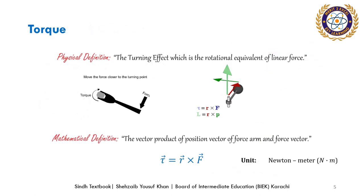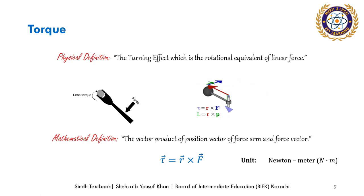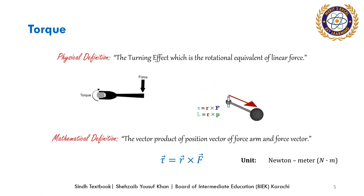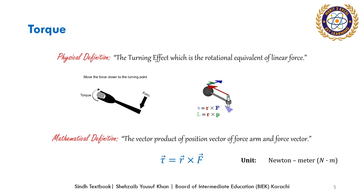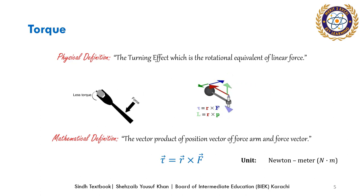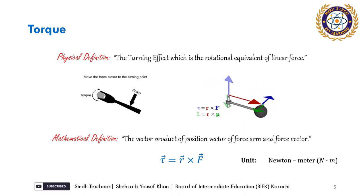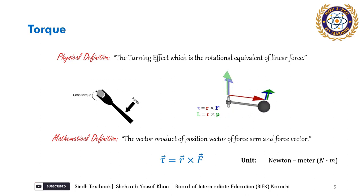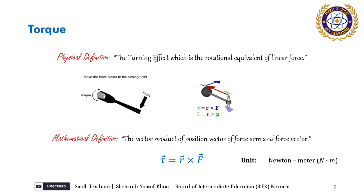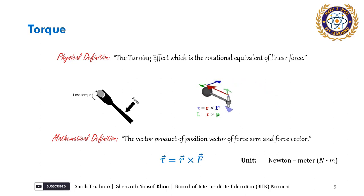We studied in linear motion that force is a tendency to cause motion. In rotational motion, we define torque — it is a rotational tendency to cause rotational motion; it is the turning effect of force. To turn a force, we need a moment arm, called the force arm, which is actually the displacement from the rotational axis. If we multiply this force arm by the force, we get a quantity called torque, and its unit is Newton meters.